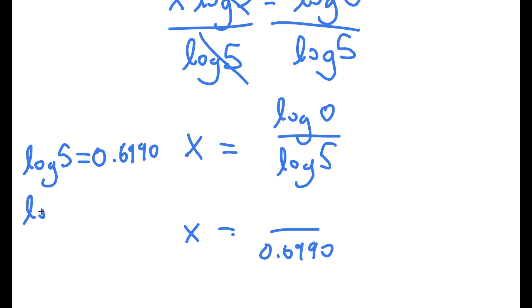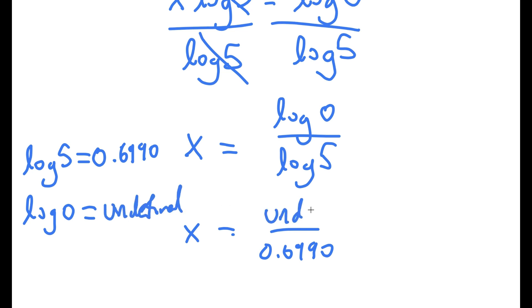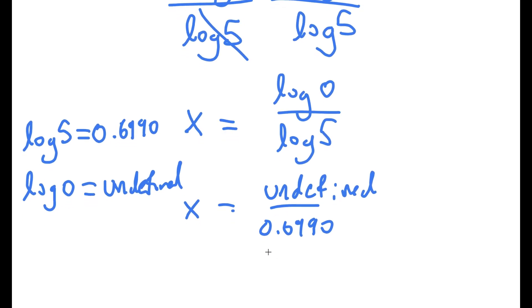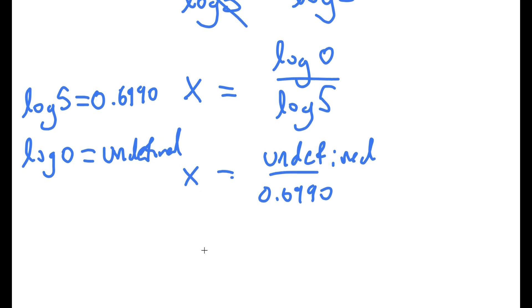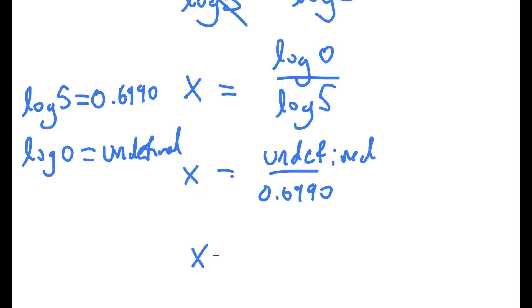And log 0 — well, what is log 0 equal to? Log 0 is actually undefined. So I have x is equal to undefined over 0.6990, meaning x is simply undefined.